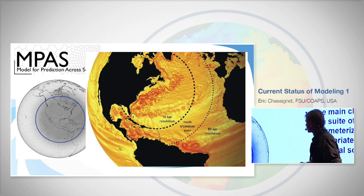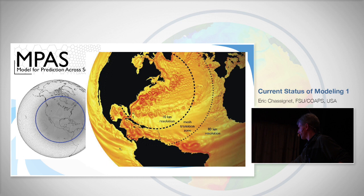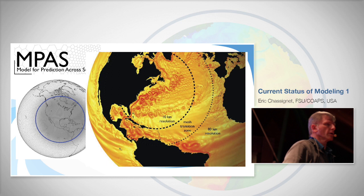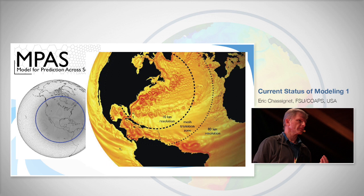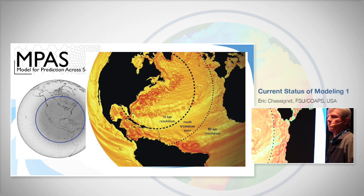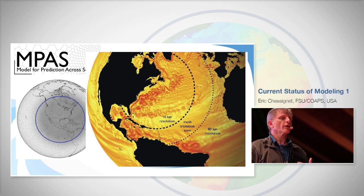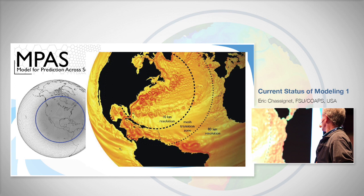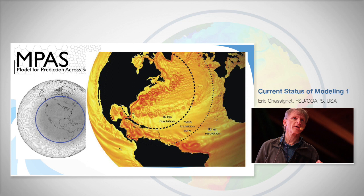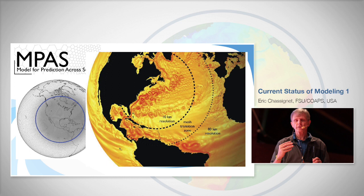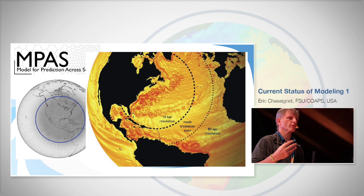One goal of the icosahedral grid is that it can be matched with the atmosphere, and it allows easy resolution refinement in selected areas — for example, 80 km globally transitioning to 10 km in the North Atlantic. The big question is: do you want proper resolution of baroclinic instabilities throughout the whole world, or are you just interested in a specific region? Computationally, the time step may be the limiting factor anyway. There are many open questions about whether to increase resolution in specific areas of a global model or to use two-way nesting separately.